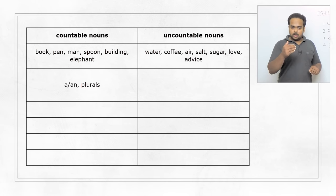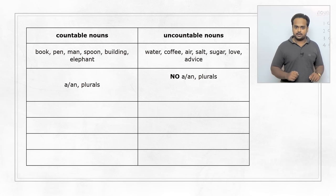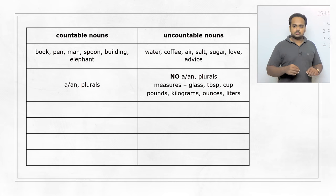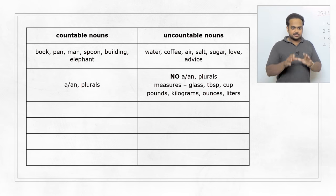So with uncountable nouns, we cannot use plurals and we cannot use a and an—that is very important. But we can use units to talk about quantity. For example, we can say a glass of water or two glasses of water, six tablespoons of sugar, or a cup of coffee, five cups of coffee, and so on. Or we can use units of volume or weight like pounds, kilograms, ounces, and liters. This is how we talk about the quantity of uncountable nouns.